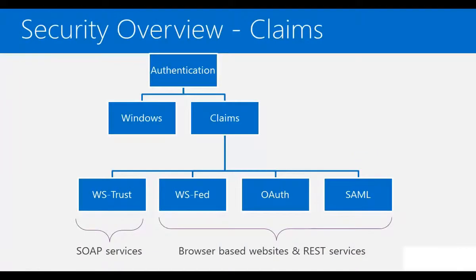Now let's move to the next topic: claims authentication. Claims authentication is used in scenarios where we have any or all of three important requirements: number one, single sign-on; number two, federation; and number three, internet-scale authentication. There are various claims authentication standards available, with the primary ones being WS-Trust, WS-Federation, OAuth, and SAML.